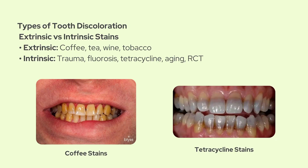So first off, let's talk about how teeth actually get discolored. Basically there are two main types of discoloration: extrinsic and intrinsic. Extrinsic discoloration is on the surface. Think stains from coffee, tea, red wine, tobacco, and pretty much anything that builds up on the enamel over time. These stains are usually easier to remove with polishing or scaling.